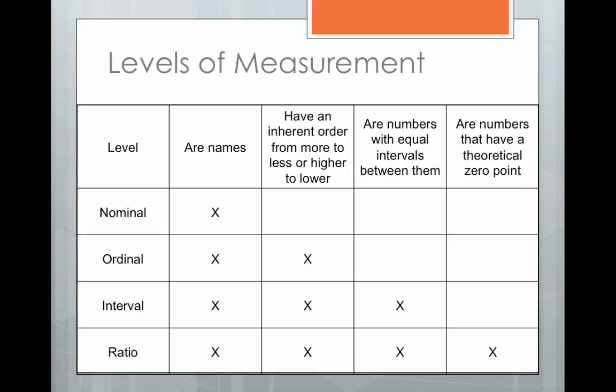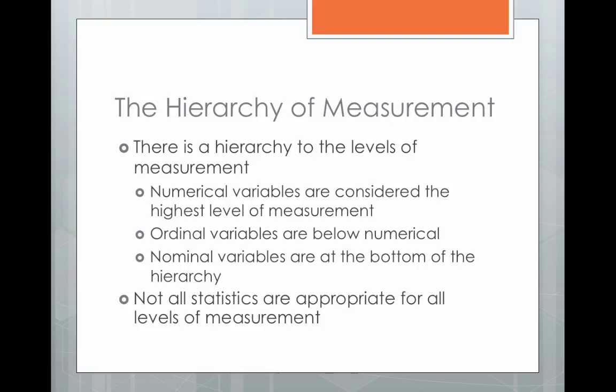Hopefully you'll find that table helpful as you're trying to remember the levels of measurement. There is a hierarchy to the levels: numerical variables are considered the highest level of measurement, then ordinal variables, then nominal variables at the bottom. Not all statistics are appropriate for all levels of measurement. As a researcher, if you're collecting data on your own, try to use the highest level of measurement possible, because you can always take a numeric variable and turn it into categories later, but you can't take categories and then divide that out into numbers later on.